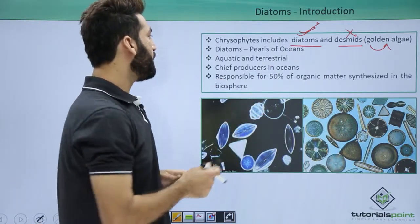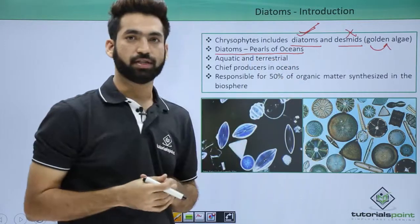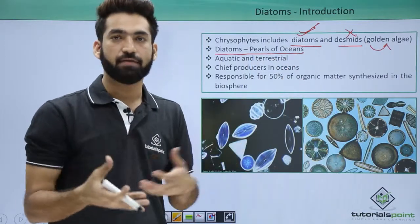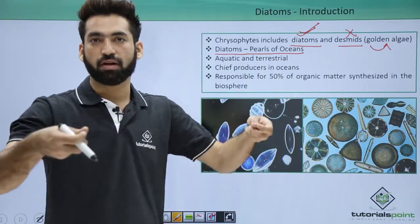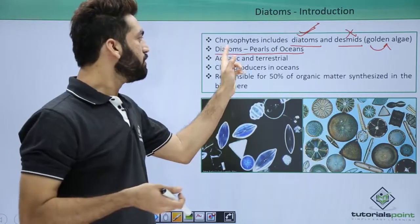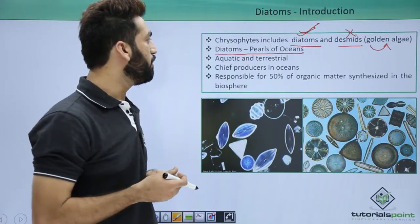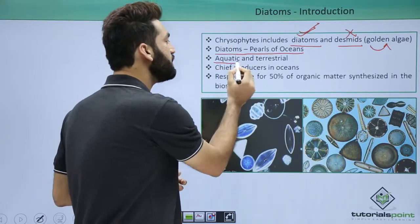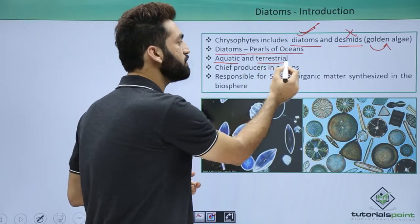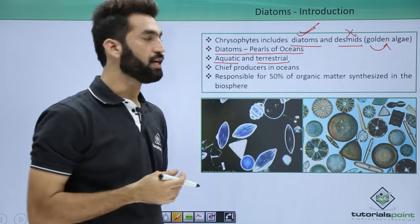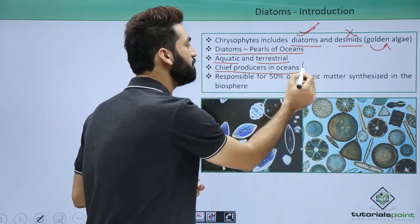Diatoms are also called pearls of oceans. They are basically found in marine water and they look like pearls. They are aquatic, though some diatom members are also terrestrial. They are chief producers in the ocean.